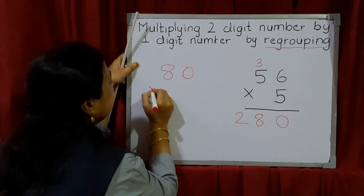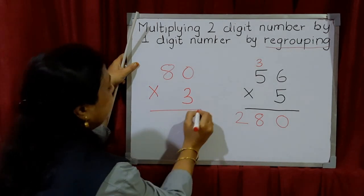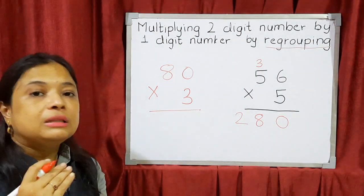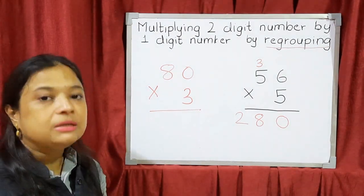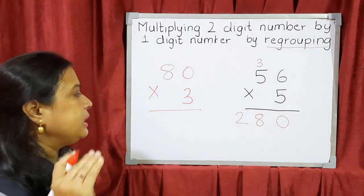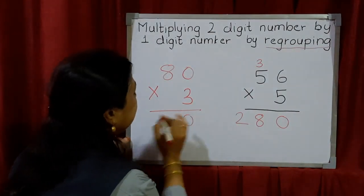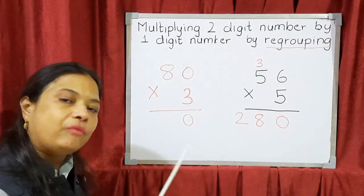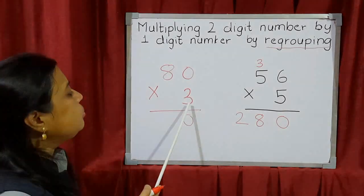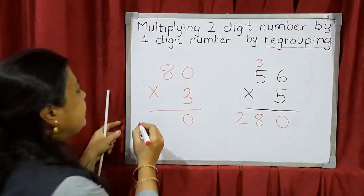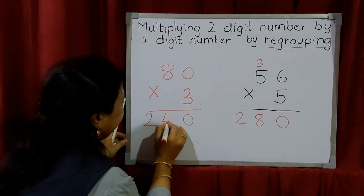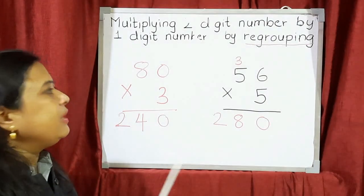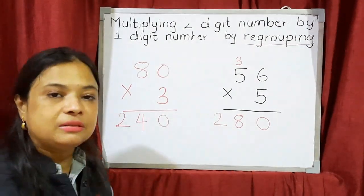Now 80 multiplied by 3. The common number is 3. 3 zeros are 0 — in the ones column, no regrouping needed, just write 0. Now 3 eights are 24. So we write down 24. The answer is 240. This is how we do two-digit number sums with regrouping.